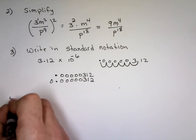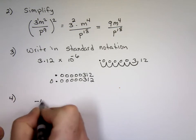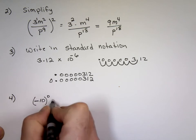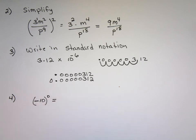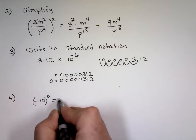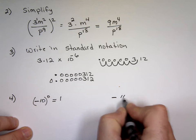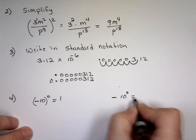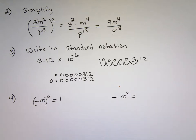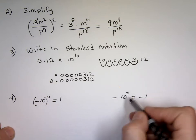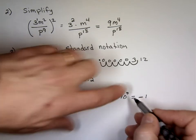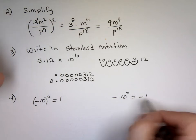Question number 4: what is negative 10 to the power of 0? The answer is 1 — anything to the power of 0 is 1. Anything to the power of 0 is 1, except 0 to the 0. But if the question is written with only the 10 raised to the power of 0, and the negative sign sitting out front, then the answer is negative 1 — because only the 10 is raised to the power of 0, not the minus.